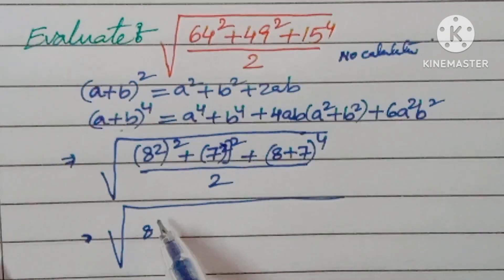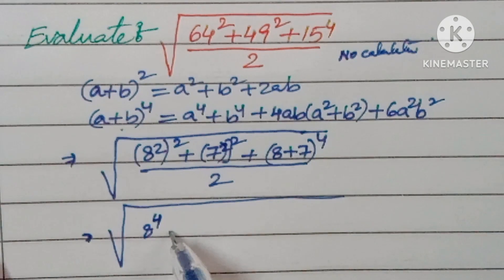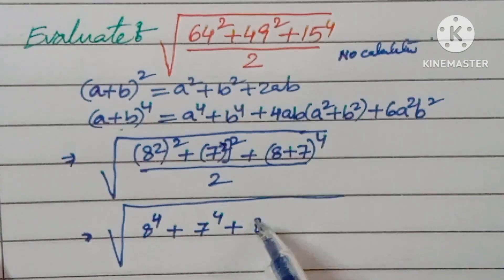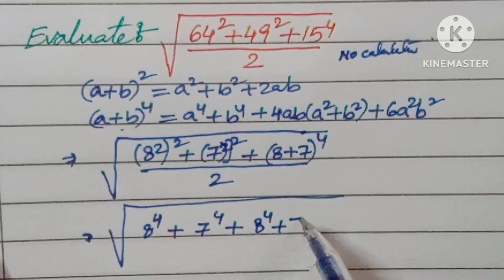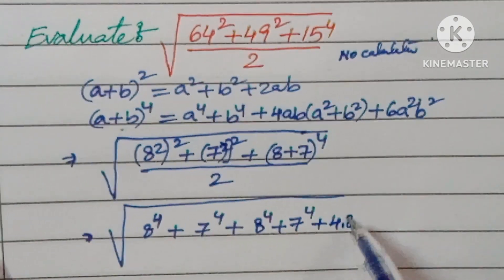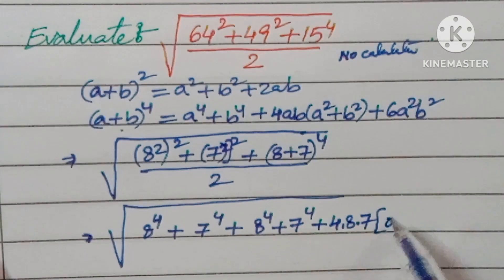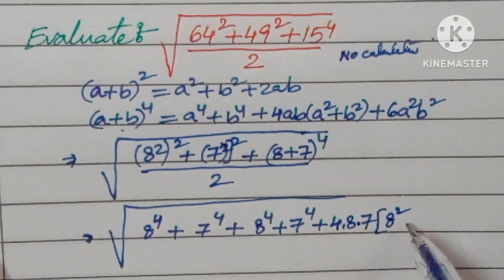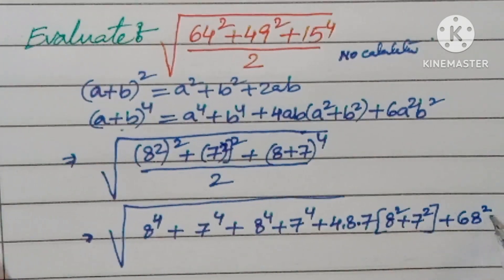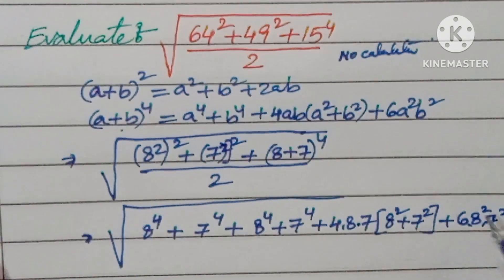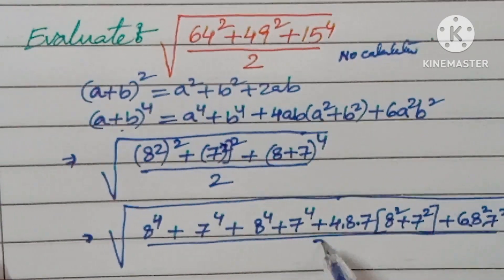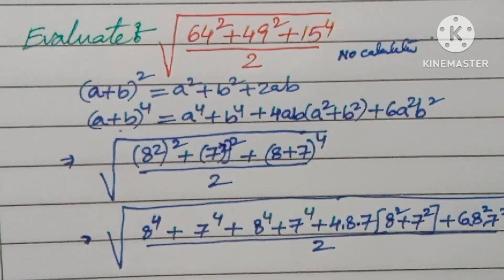If you apply (a+b)⁴, square root of 8⁴ plus 7⁴ plus 8⁴ plus 7⁴ plus 4 times 8 times 7 times (8² plus 7²) plus 6 times 8² times 7², total by 2.